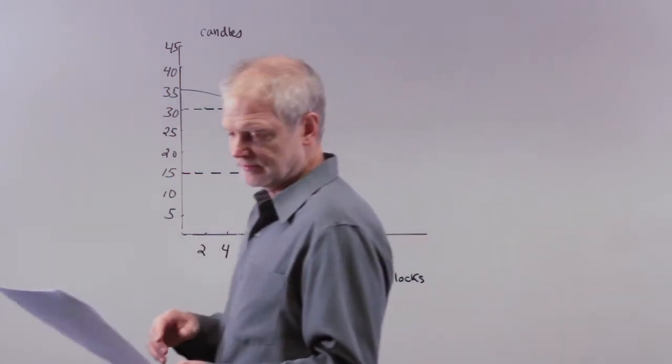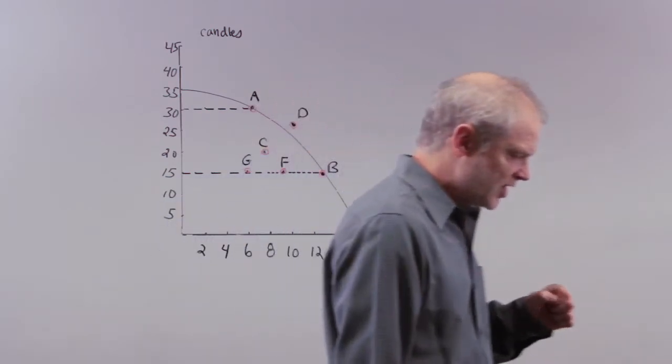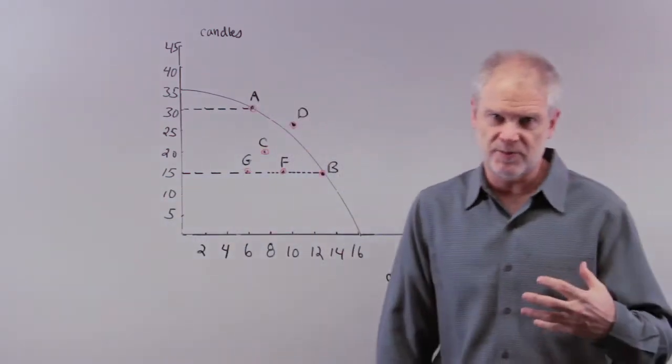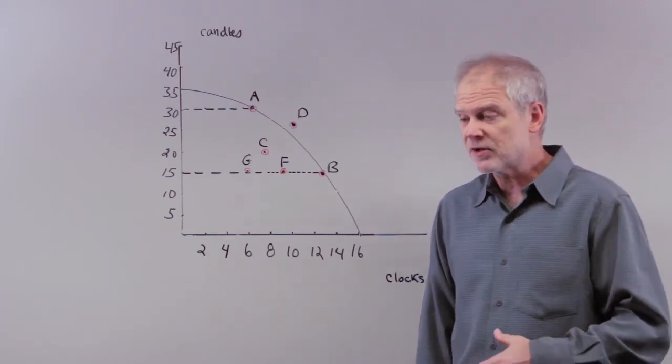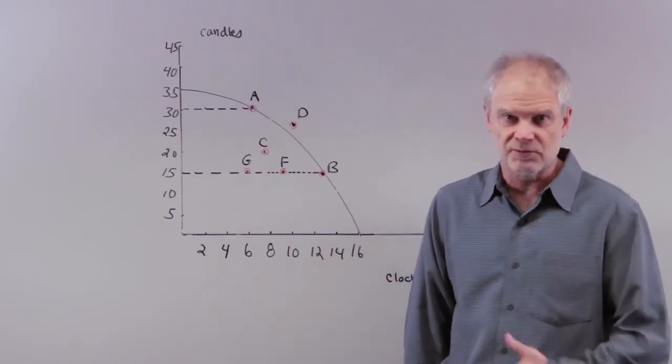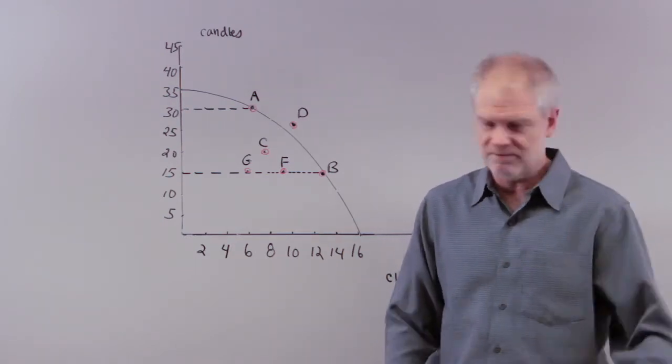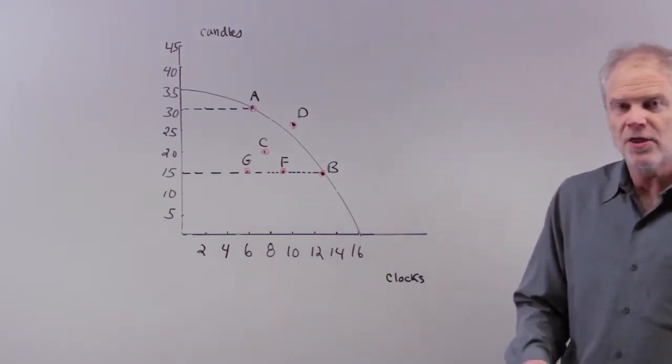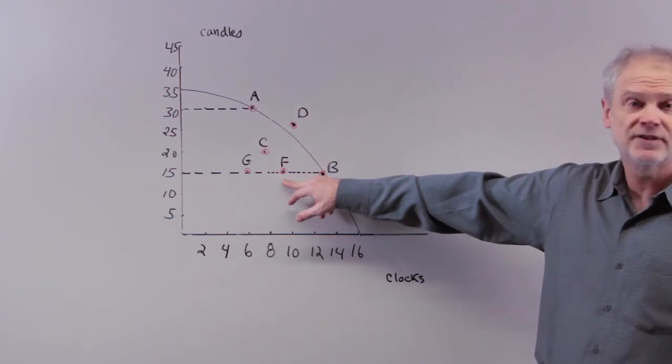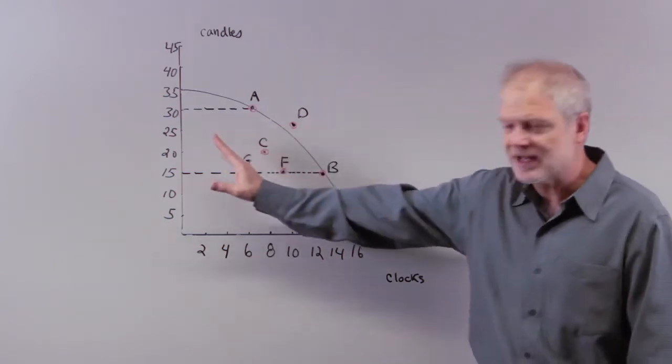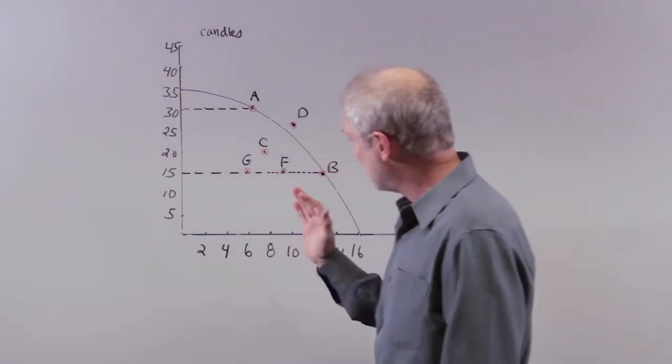If we go to number seven, inefficient production is represented by which points? So, inefficient production is where not all the resources are being used effectively, that there are people unemployed, like we have now in the economy, or there's housing stock that's not being used, which we have now in the economy, or there are factories that are not being fully utilized by workers. So, the points that represent inefficient production are G, C, and F, because they're inside the production possibility frontier. So, that answer is C on your sheet, but I want to make sure you understand why.